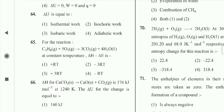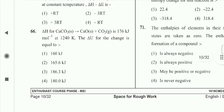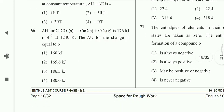Question 65: The answer is minus 3RT — option 2nd is correct. For the reaction CaCO₃ → CaO + CO₂, delta H is 176 kJ/mol at 1240 K. Delta U for the change is equal to 165.6 kJ.